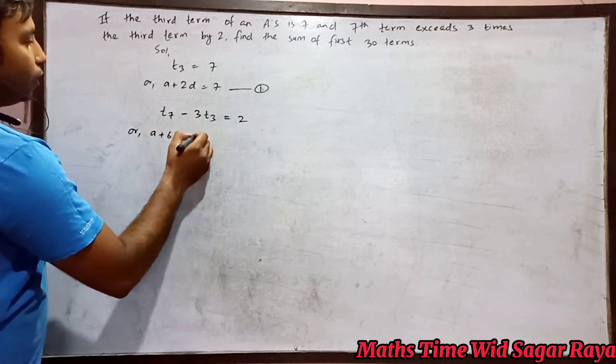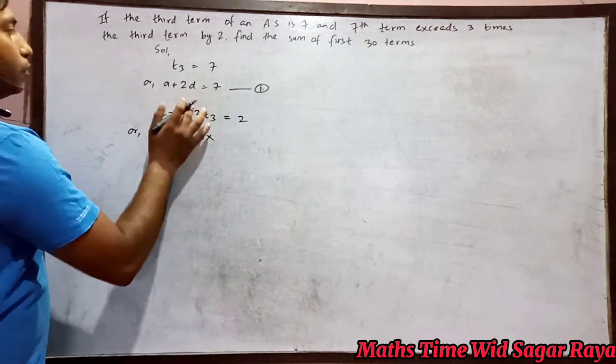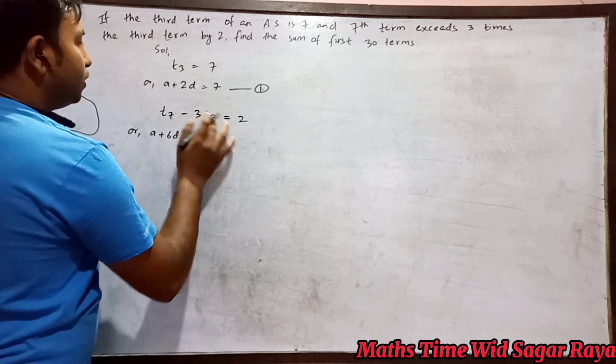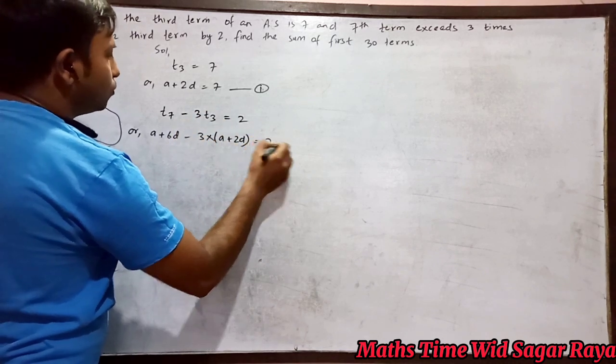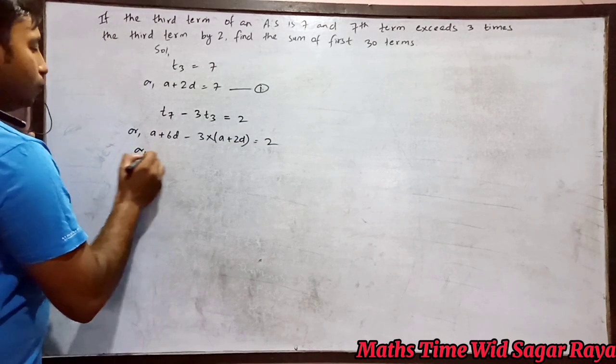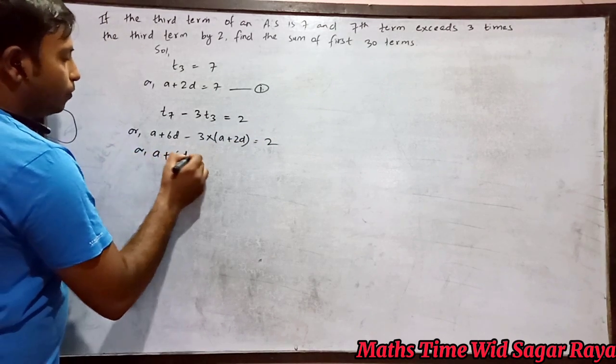So t7 means a plus 6d minus 3 times t3, which is a plus 2d, equals 2. Or a plus 6d minus 3 times (a plus 2d) equals 2.